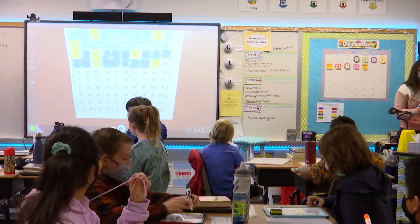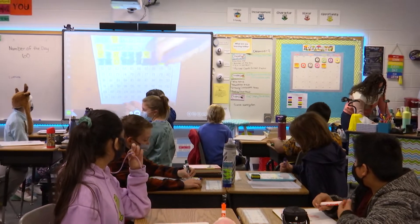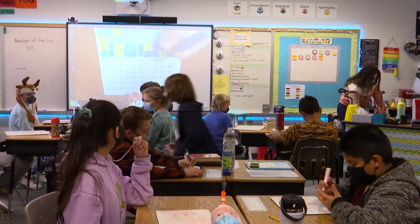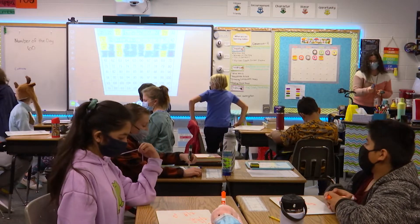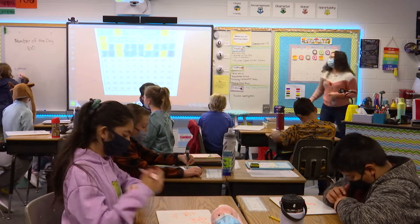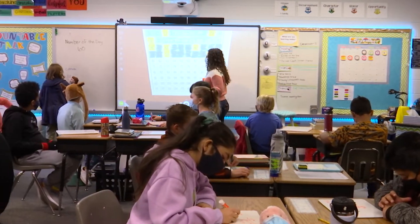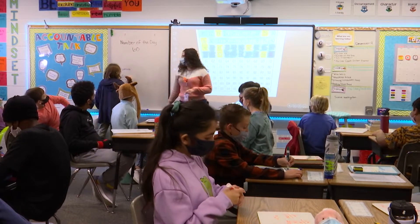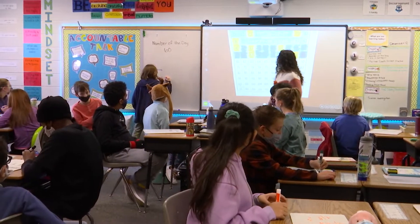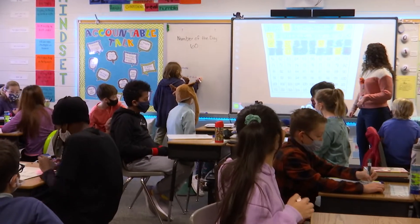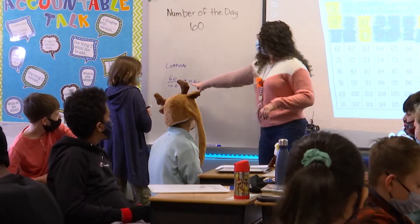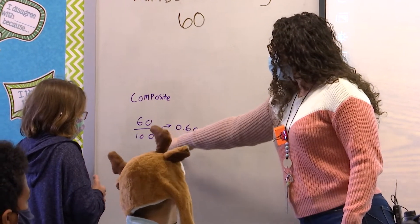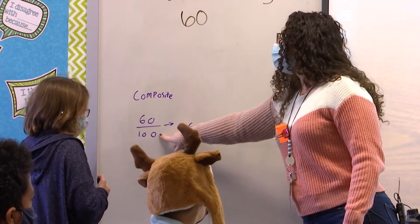All right, Cortland, what else did you identify? It is a fraction. Okay, go write it as a fraction. Excellent. And then how would you find the equivalent decimal? All right, how do you read the fraction, Cortland? Sixty hundredths.